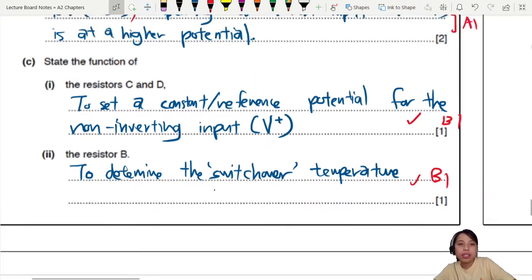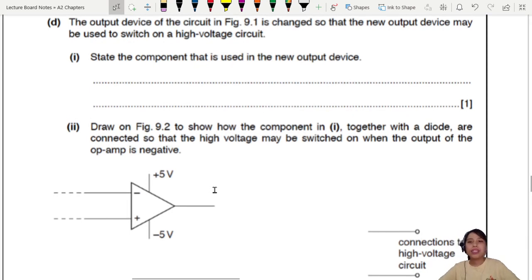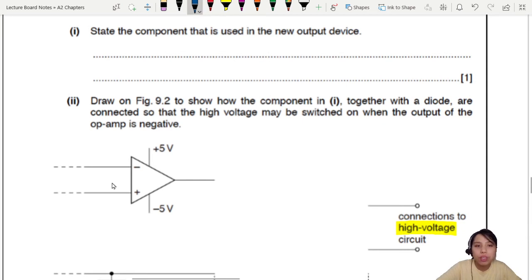Moving on to the next part. The output device is changed so that now you may use to switch on a high voltage circuit. State the component that is used in the new output device. So down here, they remove all the LED. Take away LED. Something need to connect to high voltage. When you see high voltage, you should know, oh dangerous. High voltage cannot connect to op-amp like that directly. You're going to burn. So the thing that will protect the op-amp from high voltage is the relay switch. Special kind of switch. If you haven't checked out the video for relay, go check out that one on output devices. So we just write here, relay though. One mark.